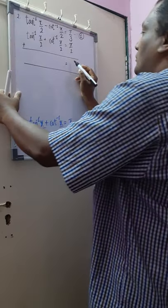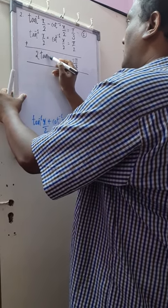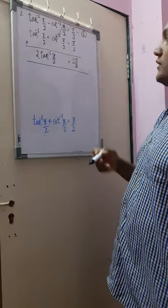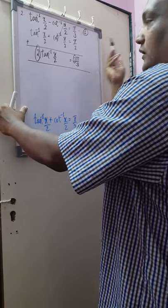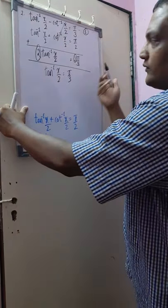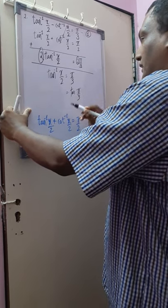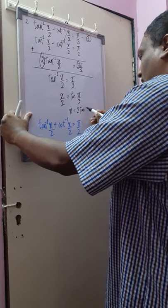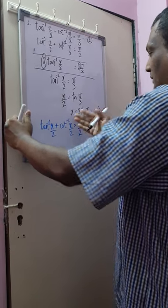Adding gives me 2pi by 3 on one side and 2 tan inverse of x upon 2 on the other. The cot inverse terms cancel using simultaneous equations, and the two factors out, giving tan inverse of x upon 2 equal to pi by 3. Taking tan inverse to the other side, x upon 2 equals tan of pi by 3, which is root 3. So my value of x is 2 root 3. These kinds of questions can come for two marks.